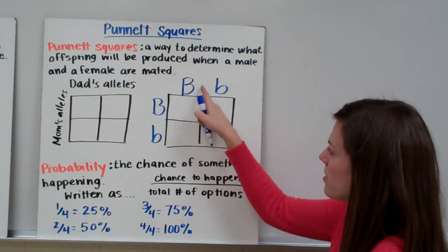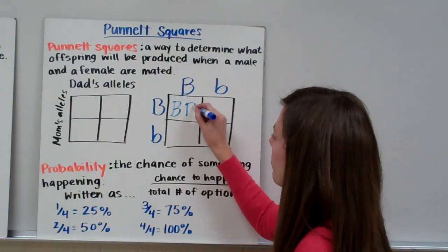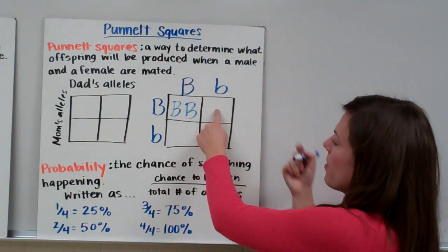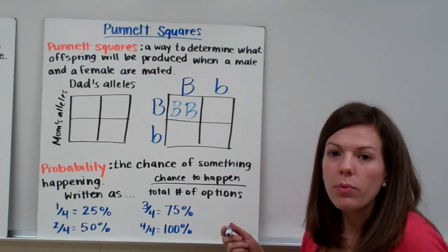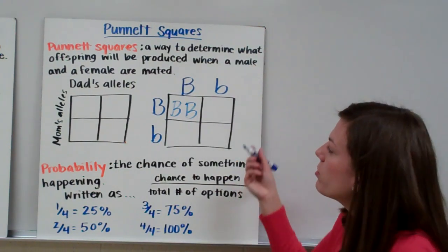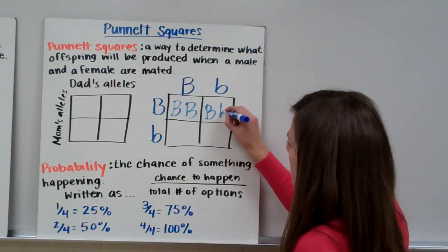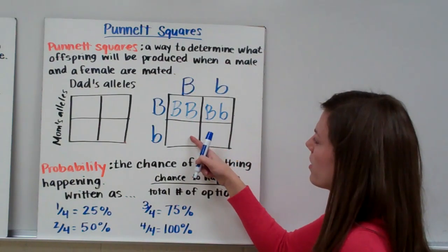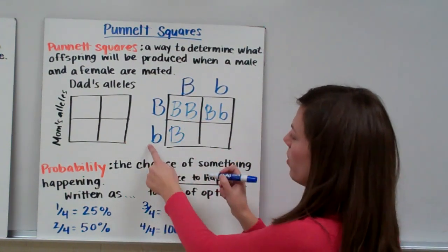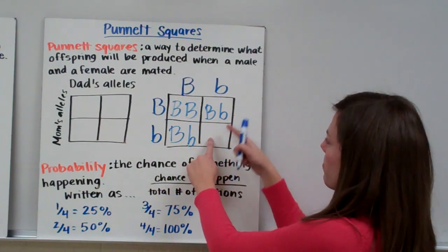To figure out what offspring you could have, you trace the letters on the top and the side of each box and write them in the center. The top of this box has a big B and the side has a big B, so this offspring would be big B big B. The next box has a little B on top and big B on the side — we write the big letter first — so big B little B. The corner box has big B from dad and little B from mom. The last box has little B from mom and little B from dad.